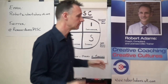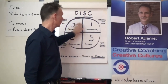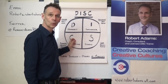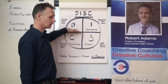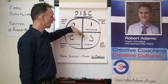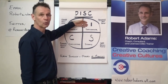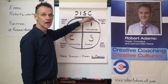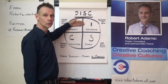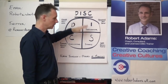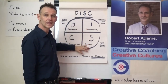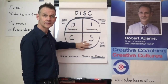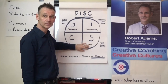So William Marston came about four different quadrants in a circle, and if we split the circle in the middle, up here we have what's called our fast outgoing orientated people, and below here we have our more reserved, considered orientated people.